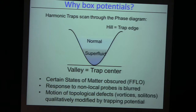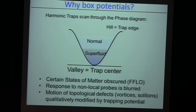Certain states of matter will even be completely obscured. There is the wonderful prediction of the FFLO state, which happens when you have more spin-ups than spin-downs. Spontaneously, the superfluid should start having wonderful solitons that pop up suddenly in the middle of the gas, and you fill these solitons with excess fermions. It's a beautiful state — has never been seen. The big reason in cold atoms is because you need a very particular density imbalance to realize this state, so you shouldn't do it in a harmonic trap.